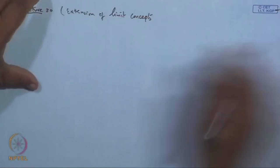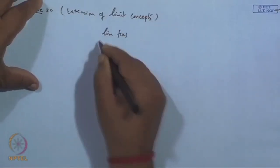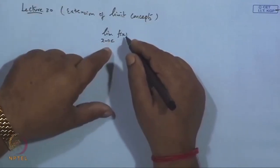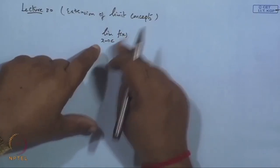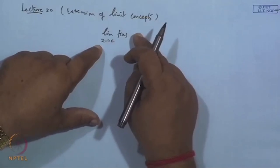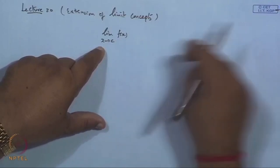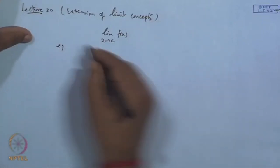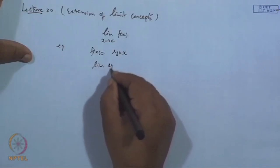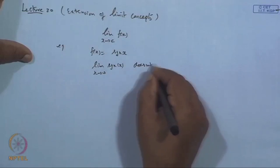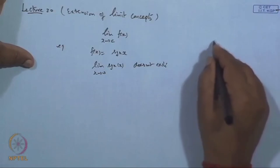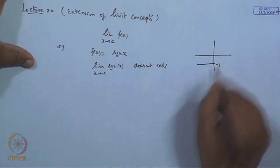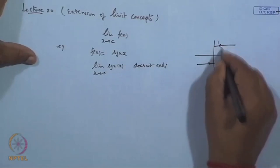In the last lecture we discussed the limit of the function f(x) when x tends to c. We saw many examples where the limit does not exist — either the function is not defined at c (going to infinity or minus infinity), or it has a different limit along different paths, meaning the right-hand limit differs from the left-hand limit.